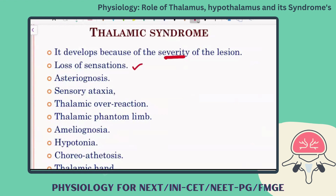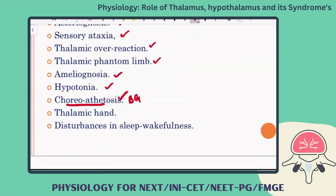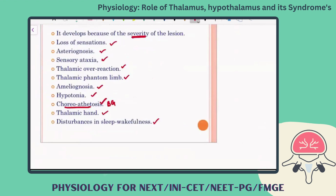Features of thalamic syndrome include: first and foremost, loss of all sensations because signals are not relayed to the cortex; astereognosis — inability to identify objects by feeling their texture; sensory ataxia; thalamic overreactions; thalamic phantom limb; amelognosia — inability to identify smell; hypotonia (loss of muscle tone) due to disrupted basal ganglia signaling affecting coordinated movement, resulting in choreoathetosis; thalamic hand; and disturbances in the sleep-wakefulness cycle.